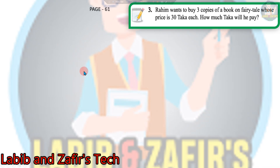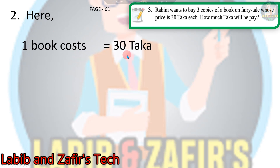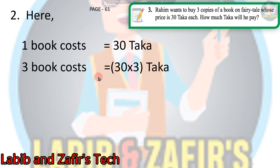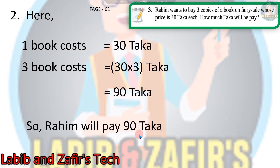The next word problem is from page 61: Rohim wants to buy 3 copies of a book on fairytale whose price is 30 taka each. How much taka will he pay? One book costs 30 taka, so 3 books cost 30 into 3 taka. If we multiply 30 by 3, that is 90 — 3 into 0 is 0, and 3 into 3 is 9, giving 90 taka. So Rohim will pay 90 taka.